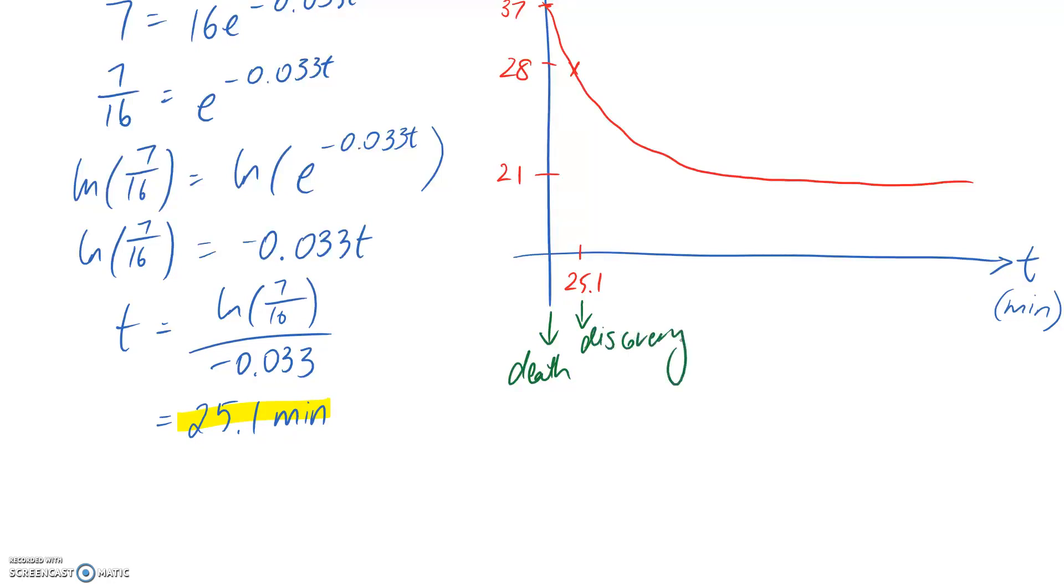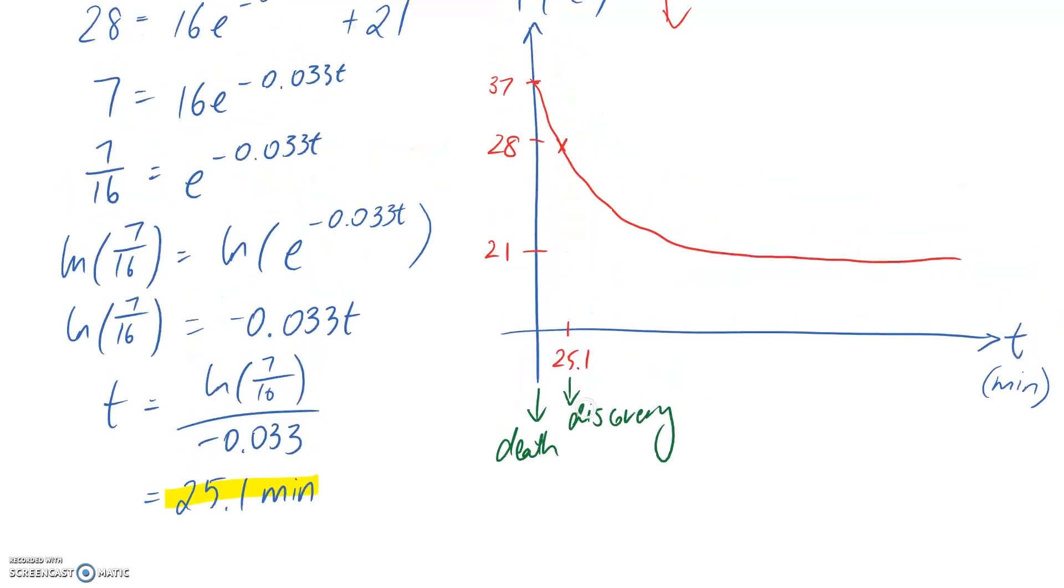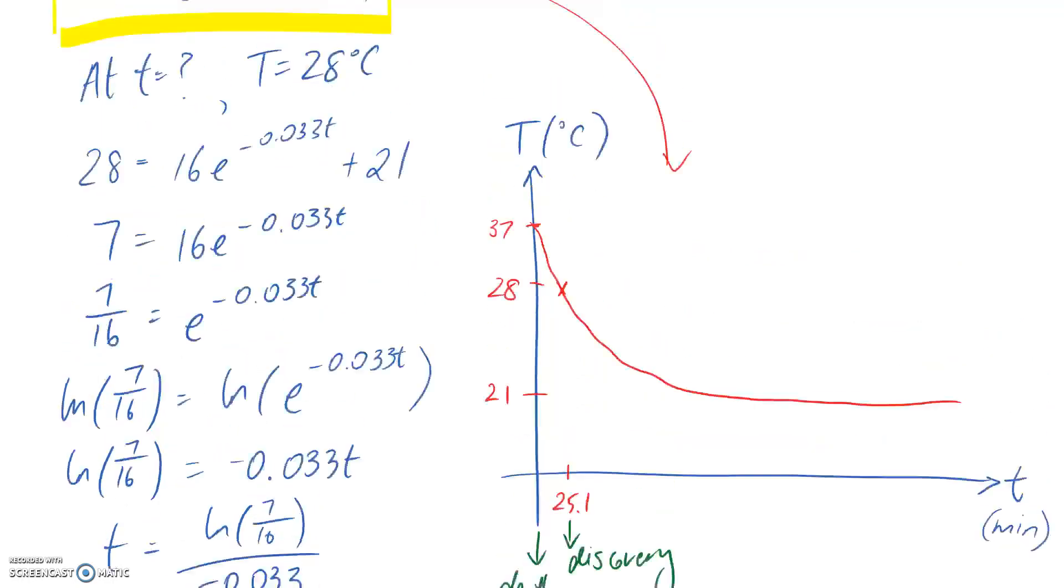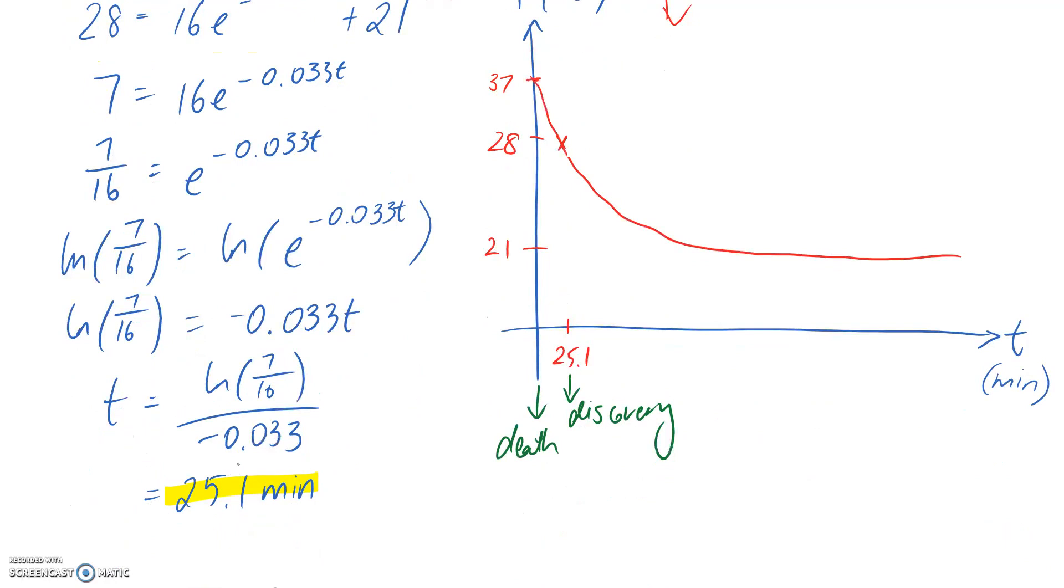Now, I just want to point out that there is another common way of trying to do this, which is where you say the time of discovery is equal to t equals zero when you set your conditions. This will work exactly the same, in that you'll get the same answer for the difference between time of death and time of discovery of 25.1.